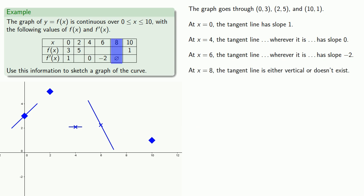And at x = 8, the tangent line is either vertical or it doesn't exist. But since f(x) is continuous, then the graph must have a point at x = 8, so it will have a cusp at x = 8.